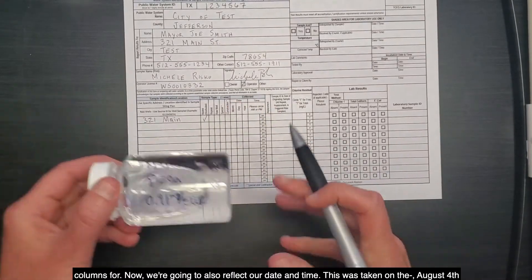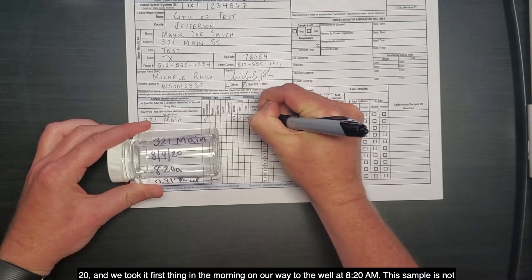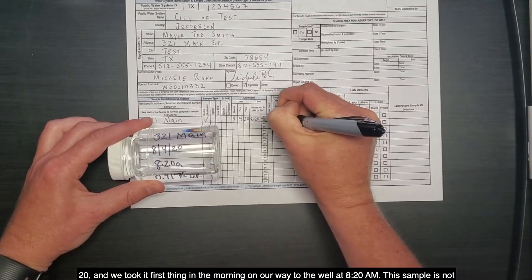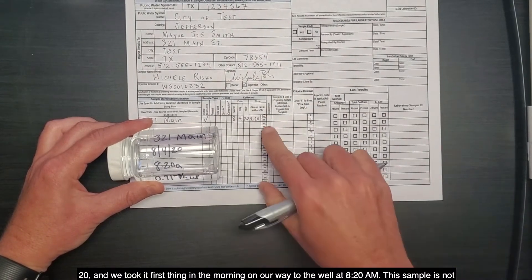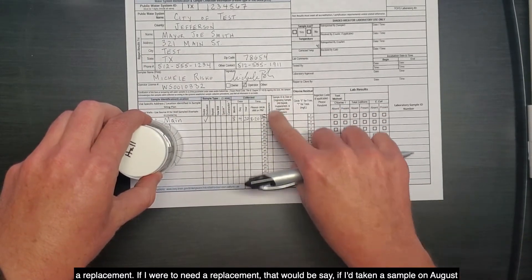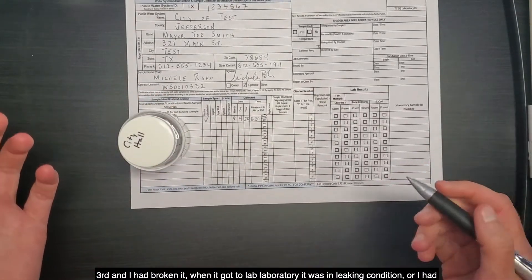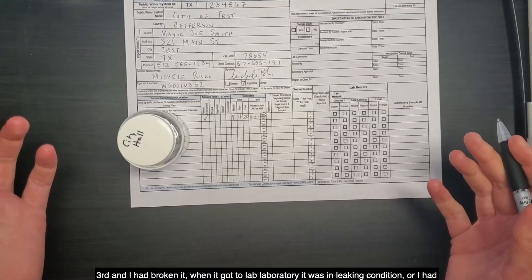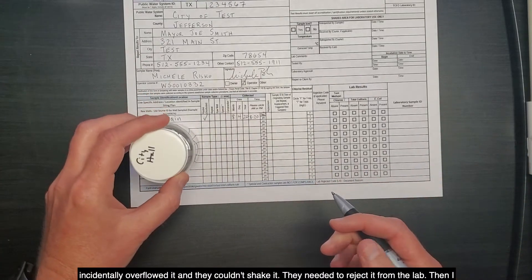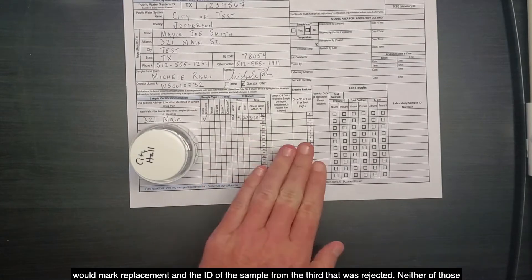Now we're going to also reflect our date and time. This was taken on August 4th, 2020, and we took it first thing in the morning on our way to the well at 8:20 a.m. This sample is not a replacement. If I were to need a replacement, that would be, say, if I had taken a sample on August 3rd and I had broken it. When it got to the laboratory, it was in leaking condition. Or I had incidentally overflowed it and they couldn't shake it. They needed to reject it from the lab. Then I would mark replacement and the ID of the sample from the third that was rejected. Neither of those apply in this case.